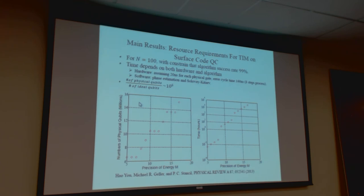If we look at the bottom-left plot, we see that the number of physical qubits is such that you basically need a million physical qubits to implement and reach a certain precision of eigenvalue energy. The precision of energy M — I'll show you later — is the precision of the ground-state energy of the transverse Ising model, and this is expressed in binary.